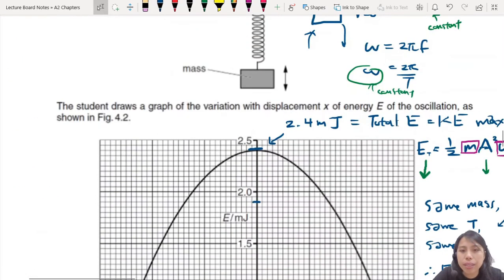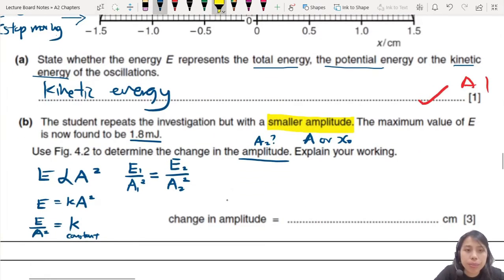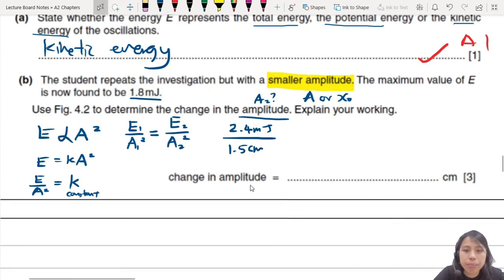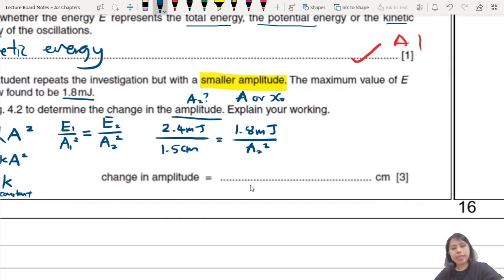So the original equation is E proportional to A square. So now how to do this ratio ratio thing. If this is true, it means E equals to some constant times A squared. If K is a constant, it should be same no matter what energy amplitude you have. Therefore, your original energy and amplitude E1 over A1 squared equals to K, which is the same as the new energy E2 over the new amplitude A2 squared. So let's write it down. 2.4 millijoules over the original amplitude 1.5 cm squared. Then you have, on the right side, the new energy 1.8 over A2 squared.